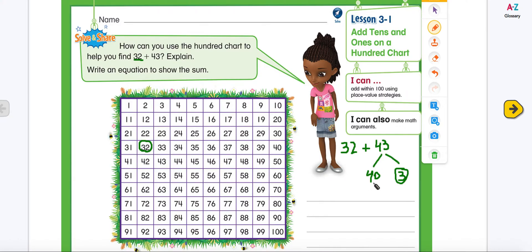First, I'm going to start with my tens here. So 32 and I need to add 4 tens. To add the 4 tens in a hundred chart, I'm going to move down.